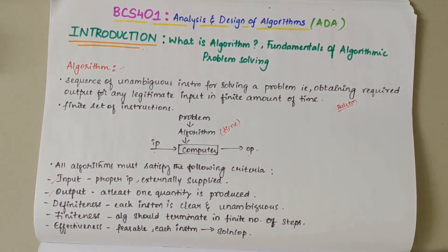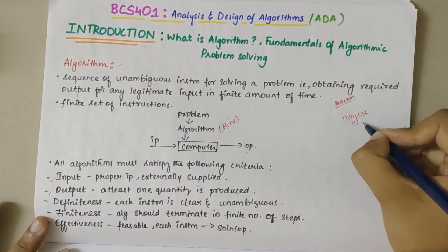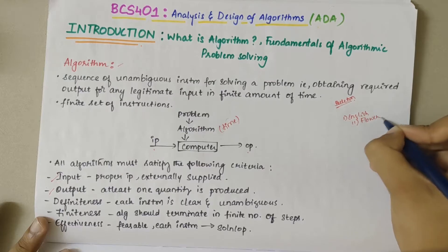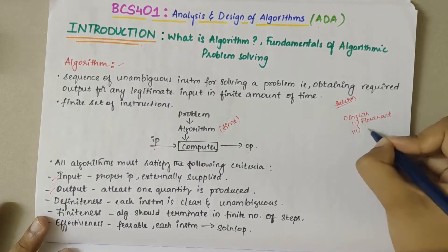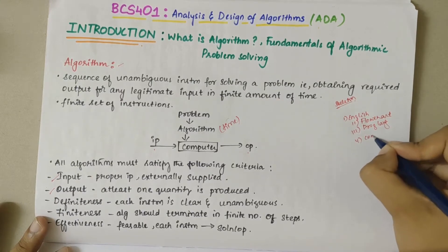Now we'll discuss algorithm specification. An algorithm could be specified in English, or it could be specified using a flowchart, or there could be any programming language, or it could be a combination of all.